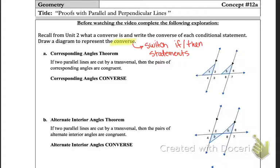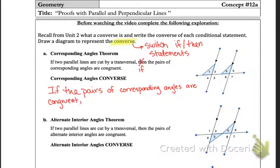So on this first example, when we do corresponding angles, we're going to take the if statement and put it first. If the pairs of corresponding angles are congruent, if we know that, then we can state that the lines are parallel. So it's just switching it.